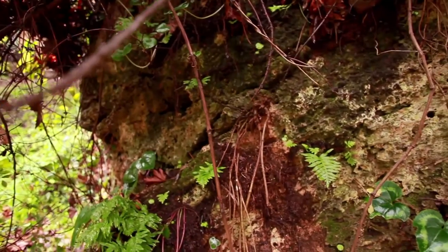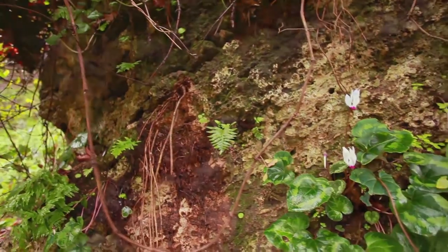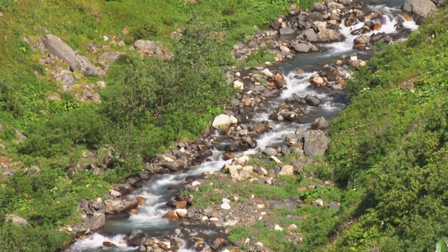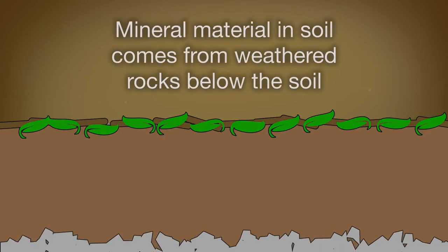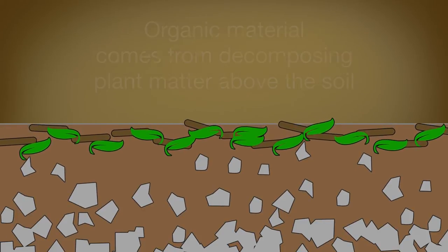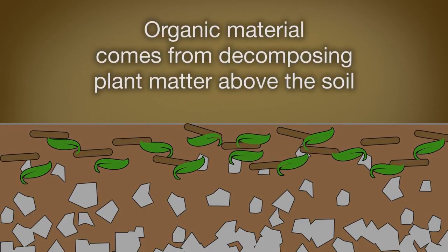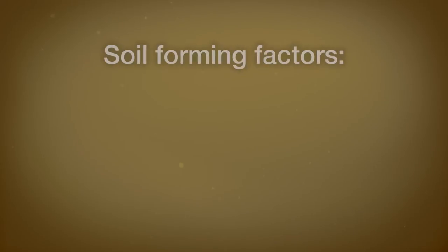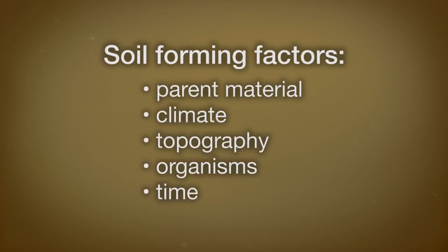Soils provide a variety of ecosystem services such as supporting plant life and purifying water. Soil is a dynamic mixture of both mineral and organic material. Mineral materials come from the weathering of rocks below the soil. Organic materials come from decomposing leaves, sticks, and branches from above. The soil forming factors are parent material, climate, topography, organisms, and time. Depending on the location in the world, one or more of these factors can have a dominant role in soil formation, which can take from hundreds to thousands of years.